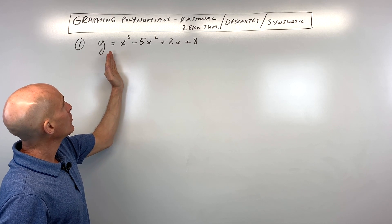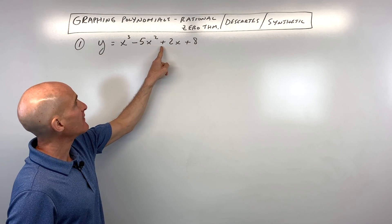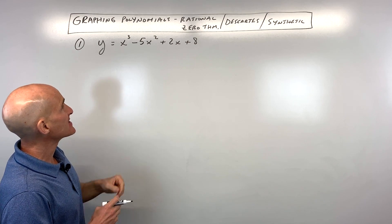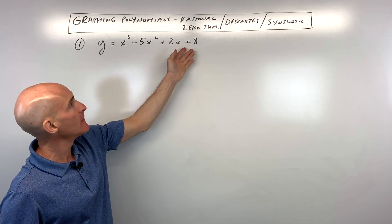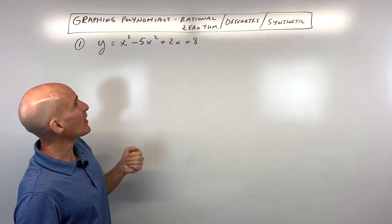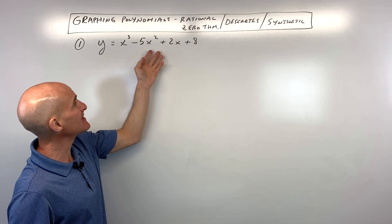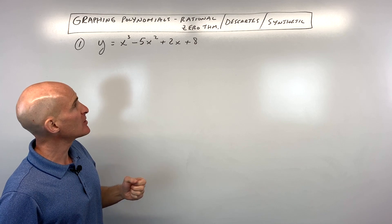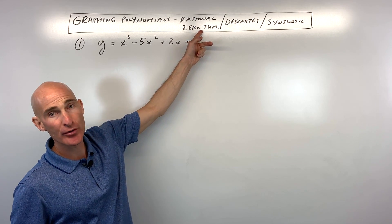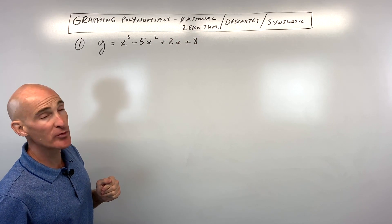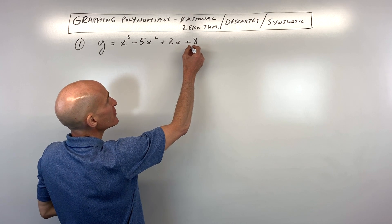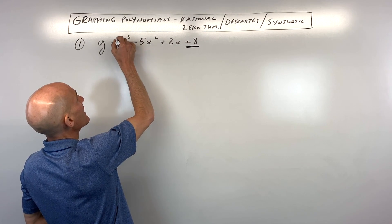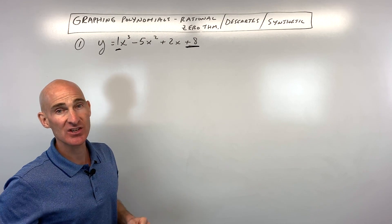The first example, we've got y equals x cubed minus 5x squared plus 2x plus 8. The first thing I would do is analyze it and say, can I factor this? Well, there's four terms — we could try factoring by grouping, but I can see that this is not going to factor by using the grouping method. So the first thing I'm going to do is jump to the rational zero theorem, or often referred to as the rational root theorem. To use the rational root theorem, you take all the factors of the constant divided by all the factors of the leading coefficient. In this case, it's 1.